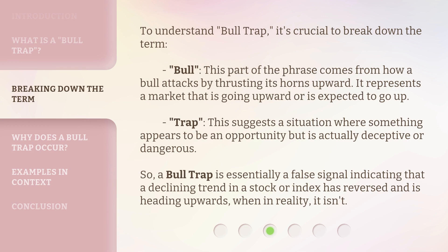To understand bull trap, it's crucial to break down the term. 'Bull' — this part of the phrase comes from how a bull attacks by thrusting its horns upward. It represents a market that is going upward or is expected to go up. 'Trap' — this suggests a situation where something appears to be an opportunity but is actually deceptive or dangerous. So, a bull trap is essentially a false signal indicating that a declining trend in a stock or index has reversed and is heading upwards, when in reality, it isn't.